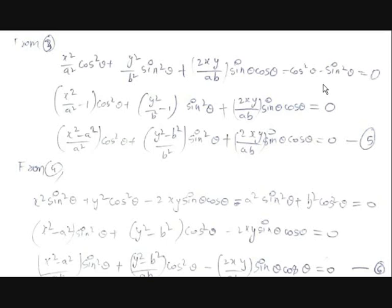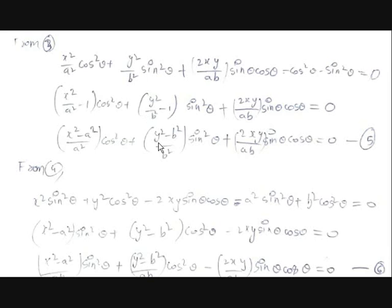Taking cos²θ common from the first and fourth terms gives (x²/A² − 1)·cos²θ, and taking sin²θ common similarly gives (y²/B² − 1)·sin²θ, plus the 2xy/AB·sinθ·cosθ term. Since 1 = A²/A², this simplifies to (x² − A²)/A²·cos²θ + (y² − B²)/B²·sin²θ + 2xy/AB·sinθ·cosθ = 0. Call this equation 5.